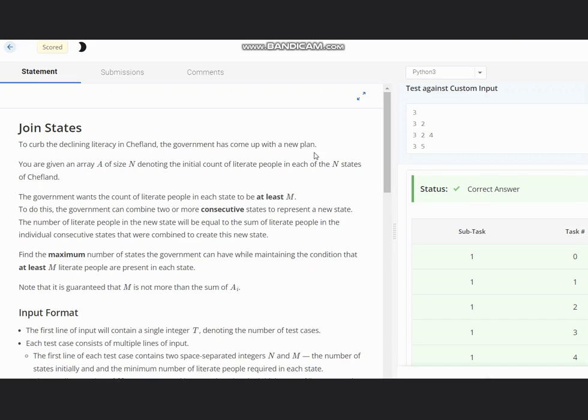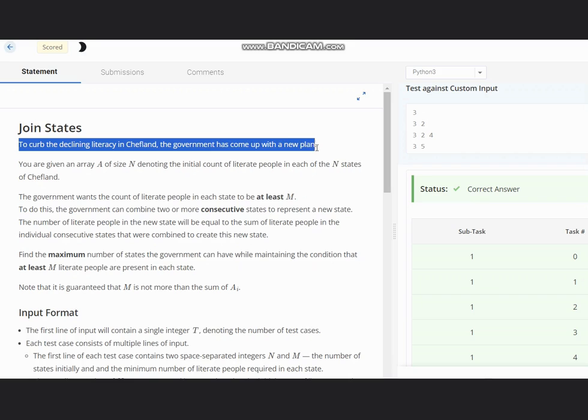Hello everyone, welcome to the channel. So here we are discussing the question Joint States on CodeChef. The problem states that to curb the declining literacy in Sheflin, the government has come up with a new plan.